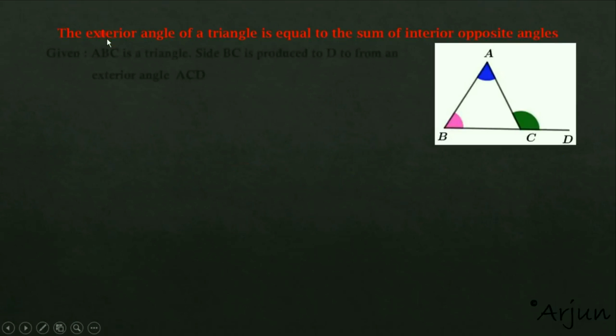Let me explain the terminology for this theorem. In a triangle, we have the exterior angle on one side, and the opposite interior angles. The exterior angle is adjacent to one interior angle and opposite to the other two interior angles of the triangle.